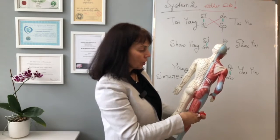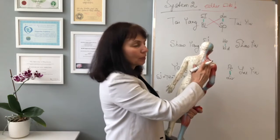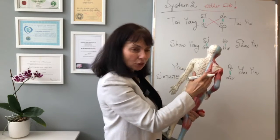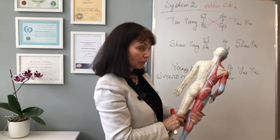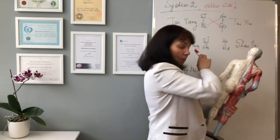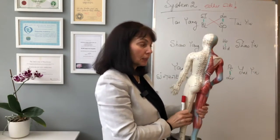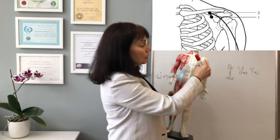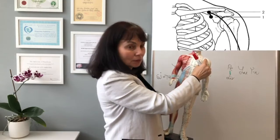The pain in this area corresponds to the scapula because anatomically they are very similar. If we use system 2 and decide to needle the Lung meridian, we will needle the Lung meridian around the shoulder.